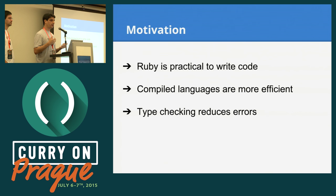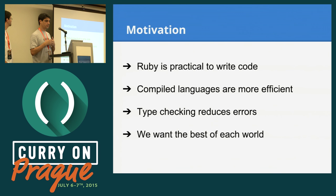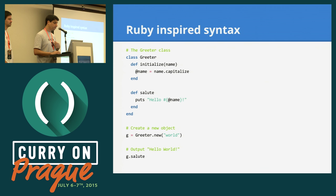Ruby is a dynamic language, and sometimes there are errors that, if not caught by unit tests, are triggered at runtime. Static type checking contributes to catching some of those errors at compile time. We wanted the best of each world, so we started this project to experiment with a language that can provide the flexibility of Ruby but the advantages of a compiled language.